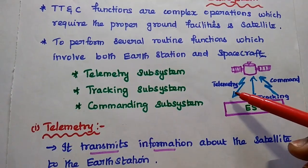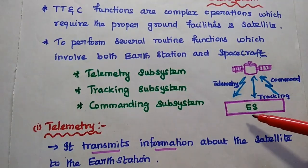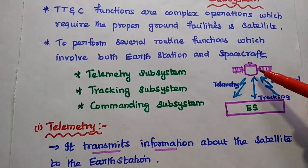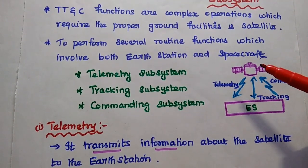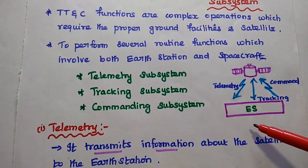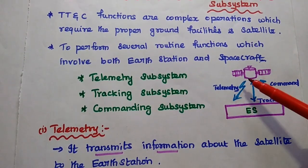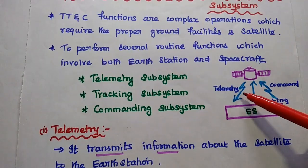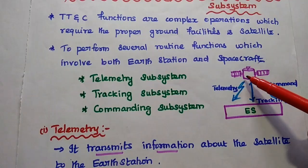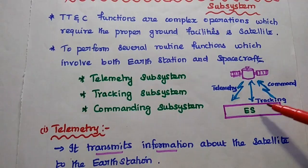Telemetry is the subsystem which is mainly used to transmit the information about the satellite to the earth station. The satellite has been launched for a particular purpose, so it has to transmit the data of the service and also the satellite information to the earth station. Telemetry means measurement at a distance. It receives details from the sensors used in the satellite and then transmits those data to the earth station for further analysis.